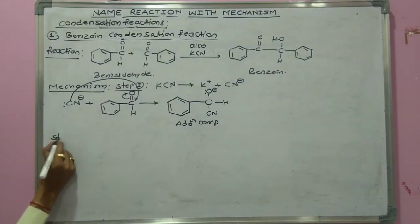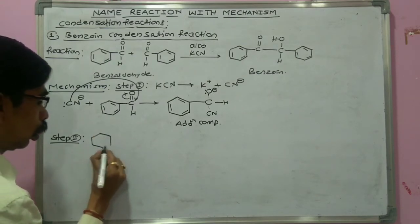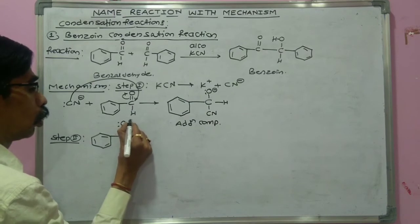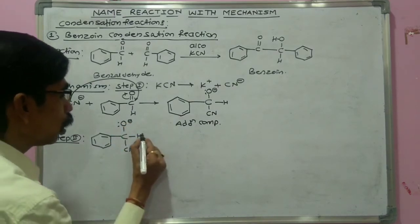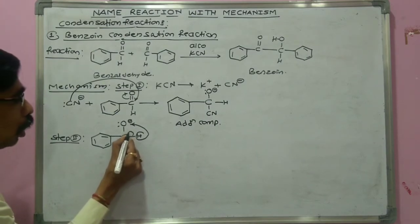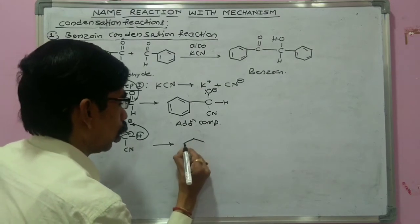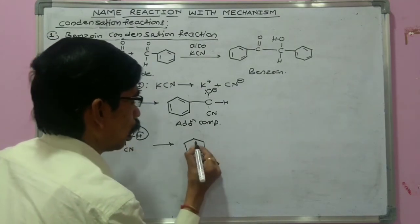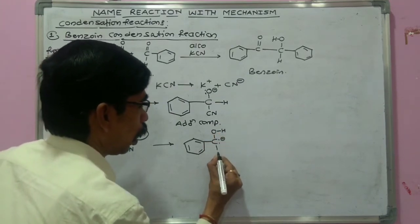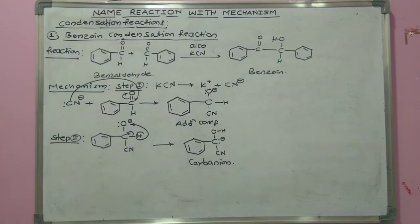Step two: in this addition compound, a proton is transferred onto the negatively charged oxygen atom, and the bond is transferred onto the carbon atom. The carbon atom becomes negatively charged, and therefore it is called a carbanion. So in the second step, a carbanion is formed.